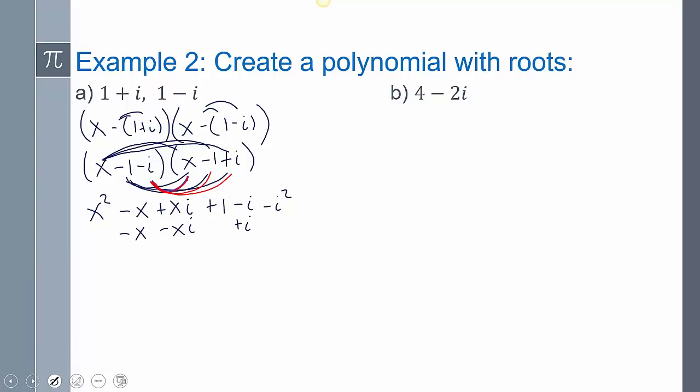When you do this, if you did it right, you're going to notice any value with an i is going to cancel out. So positive xi, negative xi cancel out. Negative i and positive i cancel out.